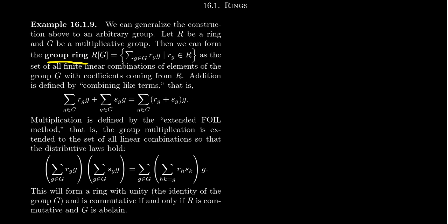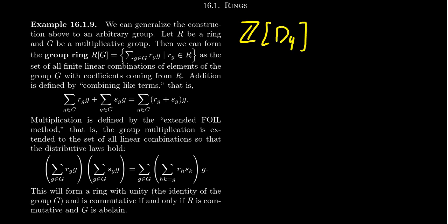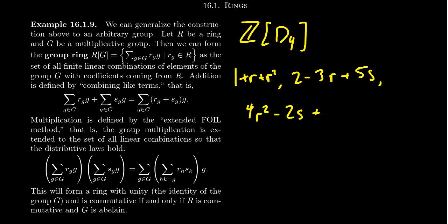The group ring will be denoted R(G), in which case we take the sum of all linear combinations of elements of the group. As the group is considered a multiplicative group, we don't add together elements of the group except to add like terms. For example, consider the group ring with integer coefficients and the dihedral group D4 as the group. Some examples of elements would be: 1 + R + R², or 2 - 3R + 5S, or 4R² - 2S + 7R³ + 4R²S.